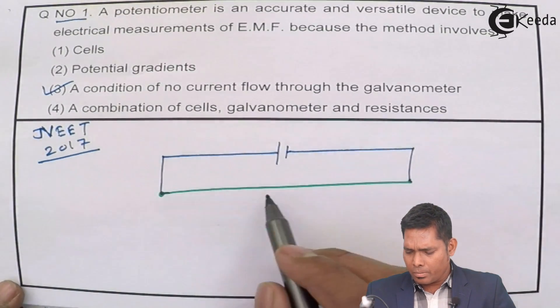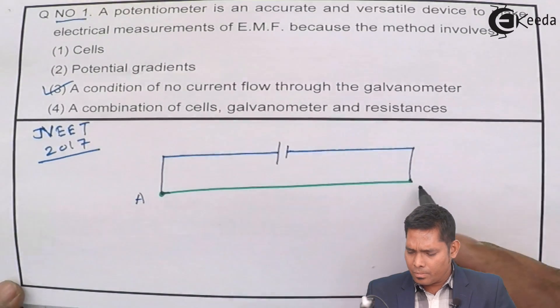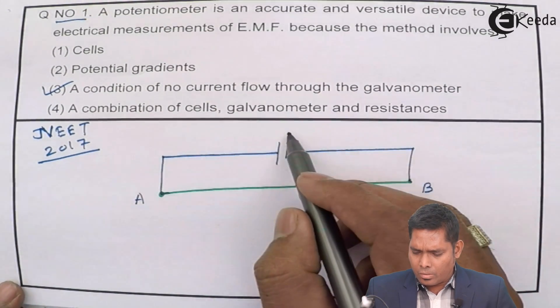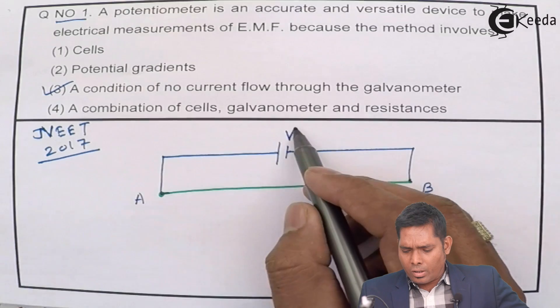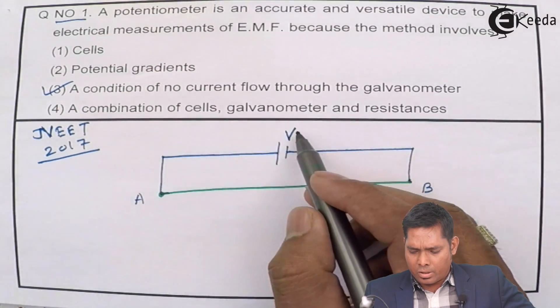This is the potentiometer wire. Let us say this is AB. And the V or EMF, you call it,